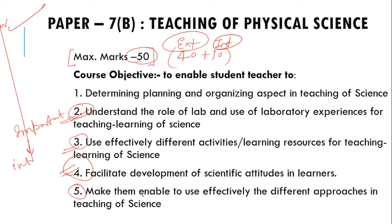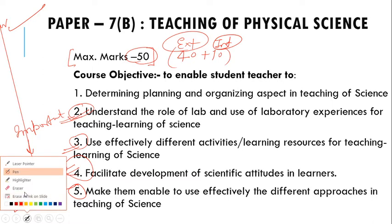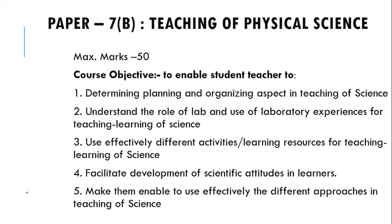Most importantly, the fifth objective is to enable student teachers to use effectively different approaches in teaching of science. Most of the time in the Indian education system, a stereotype has been established that science and maths are complex subjects. But it is very true that science is easier than any language subject, more easier than any humanities subject, and more interesting than dance, painting, or music. The major objective is to make a pupil teacher able to make the subject interesting for students. I hope you can understand the importance of this paper in your B.Ed curriculum.